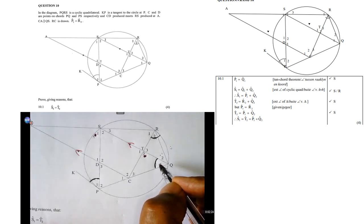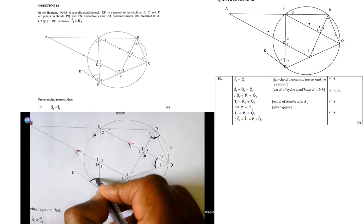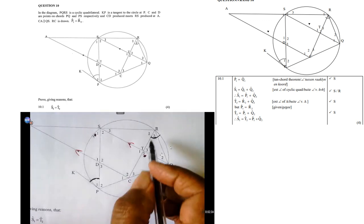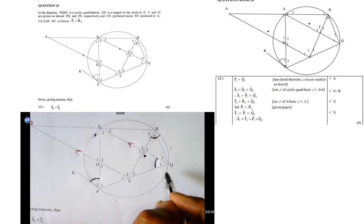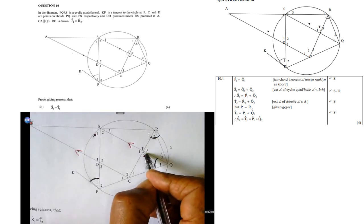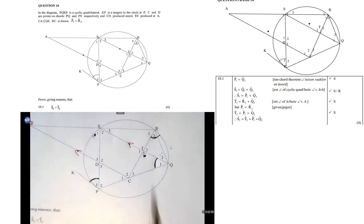But P1 is equal to R2. That was given to us, remember? So therefore, T2 is then equal to P1 plus Q2. So therefore, S1 is then T2, which is P1 plus Q2.